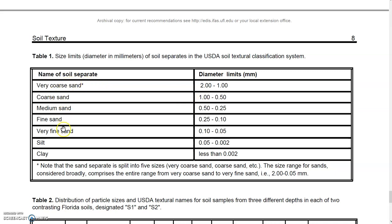Generally, all sand subcategories fall under the broader 'sand' category. Sand has five divisions but is broadly considered as one group ranging from 0.05 mm to 2 mm in size. This is the size range for sand, broadly compared to the entire range from very coarse to very fine sand.